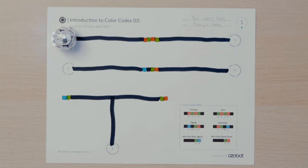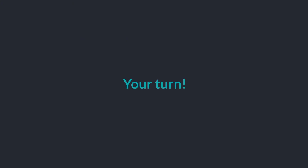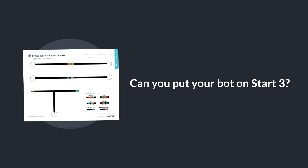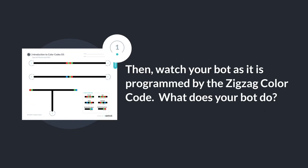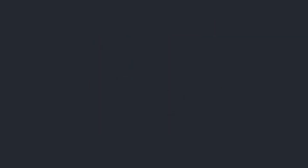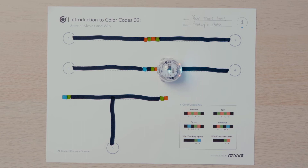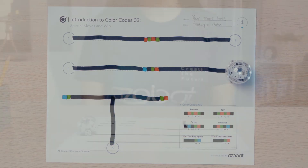Let's move on to another special move. Put your bot on start number three and observe how it uses its line sensor to follow the pathway and its color sensor to process the zigzag color code. Then watch your bot as it is programmed by the zigzag color code. What does your bot do? When you programmed your bot using the zigzag color code, it should have moved forward, turning slight left, then turning slight right. It looped or repeated the sequence two times.